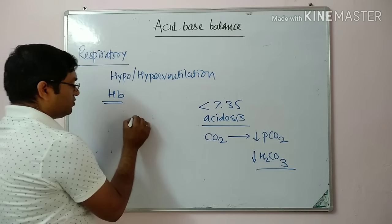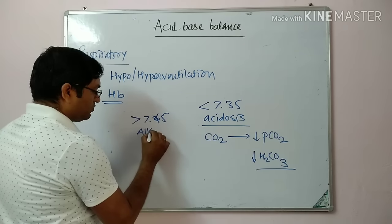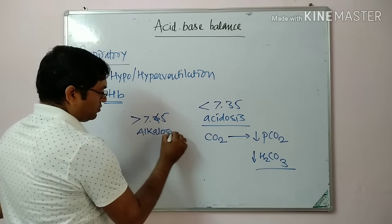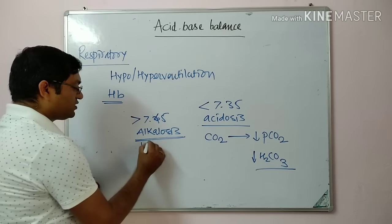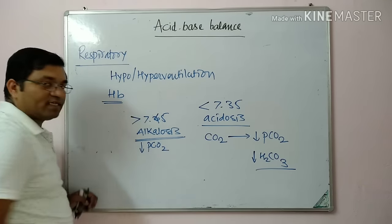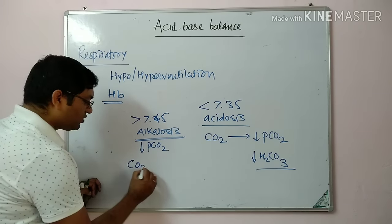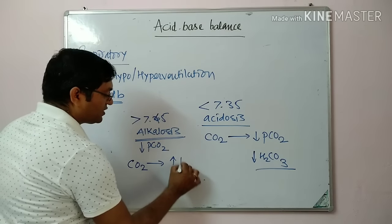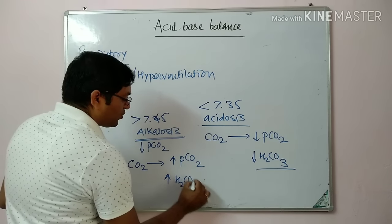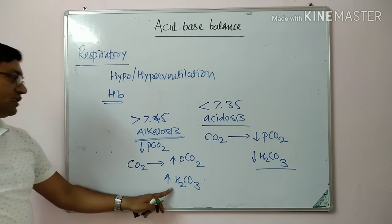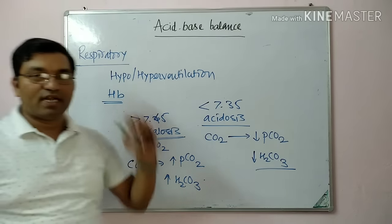In alkalosis (pH above 7.45), there is decreased partial pressure of CO₂. The lungs retain CO₂, increasing the partial pressure of CO₂ and increasing dissolved carbonic acid, which corrects the alkalosis. This is the mechanism of hypoventilation and hyperventilation.